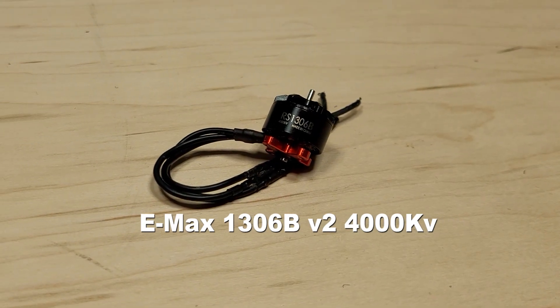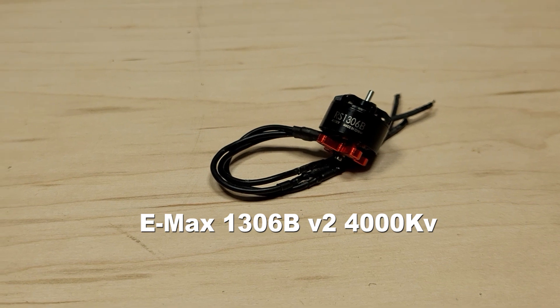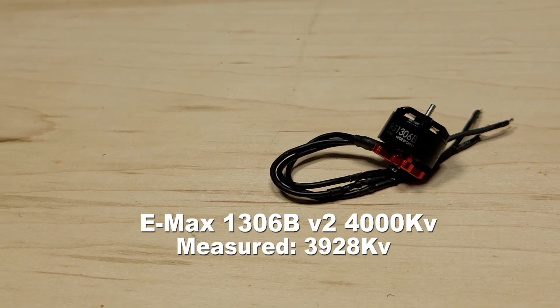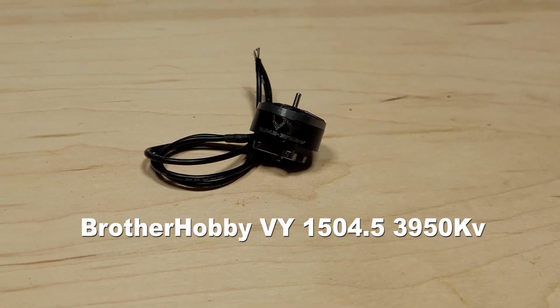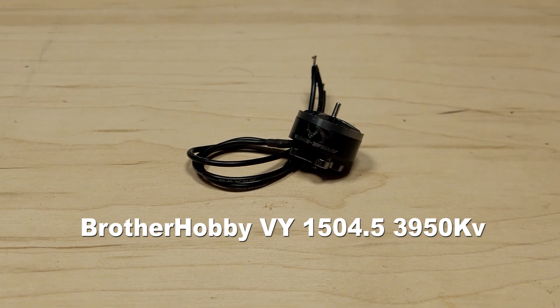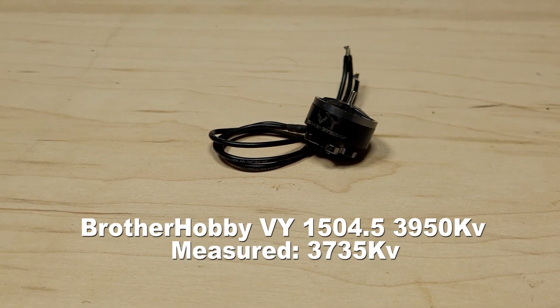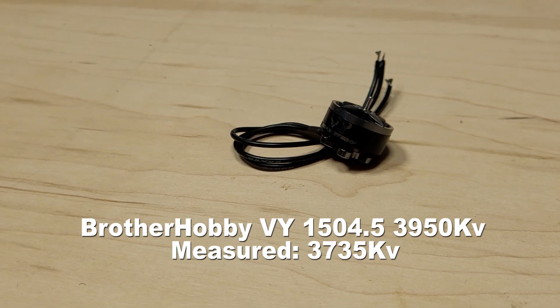EMAX 1306B V2 4000 KV motor, measured at an actual 3928 KV, 1.9% under spec. Brother Hobby VY 1504.5 3950 KV motor, measured at an actual 3735 KV, 3.8% under spec.